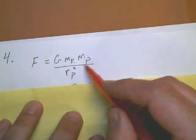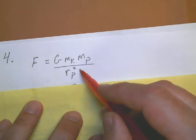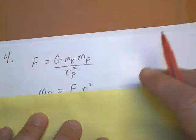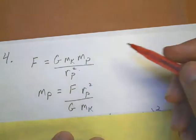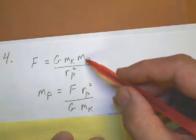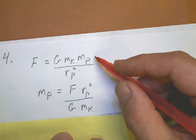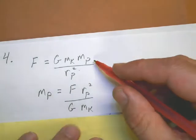Solving for the mass of the planet over here. Again, isolating the variable like you've done many times in math class. The mass of the planet will be equal to the force between them times the radius squared of the planet divided by G times the mass of Kirk.